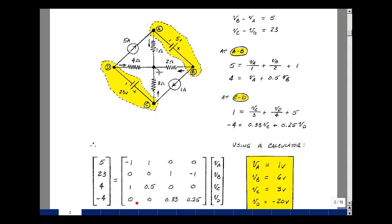And then lastly, I have minus 4 equals 0.33 times V sub C plus 0.25 times V sub D. And again, this column is associated with multiplication of V sub A, V sub B, V sub C, and V sub D.